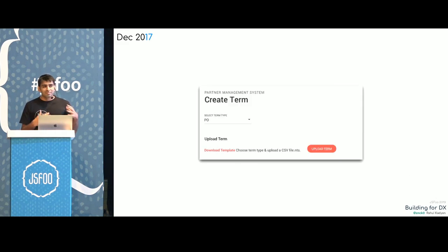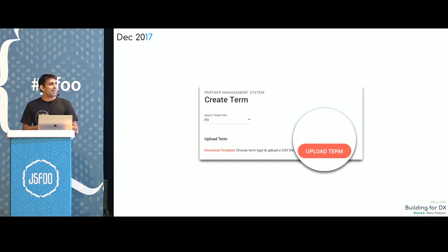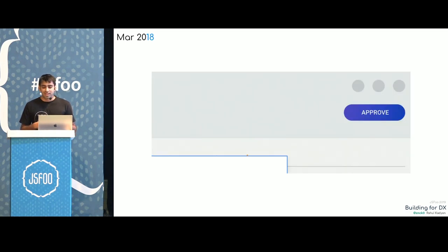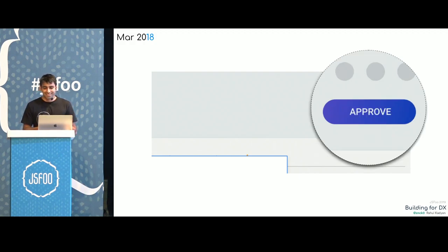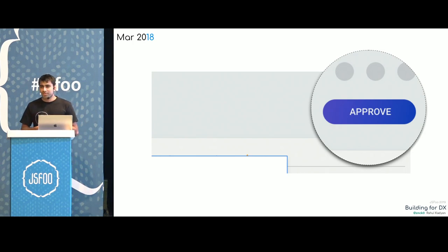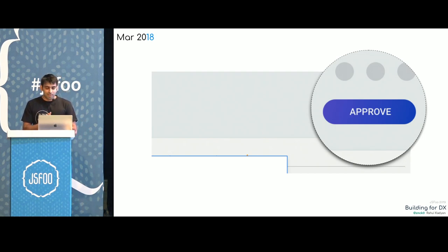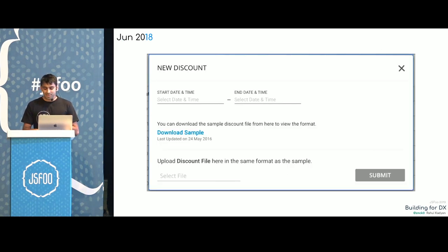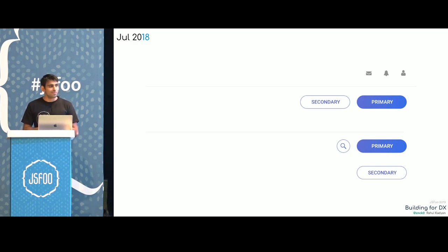That was the first time the system broke. Just three months later, one more design came in with a different guideline and different buttons. I'm taking buttons as an example because they are the primitive thing when we talk about building a website. Just after one year and three months, we had three buttons. Three more months, one more button. Next month, more buttons.